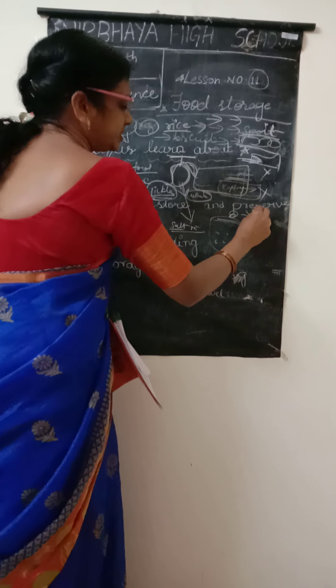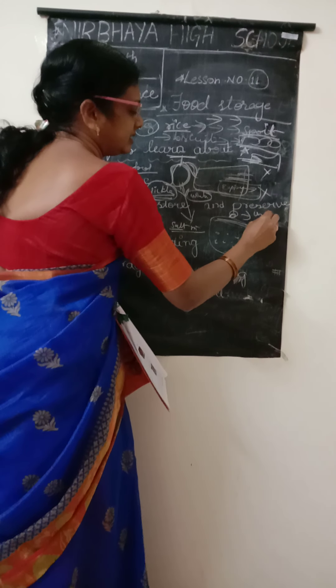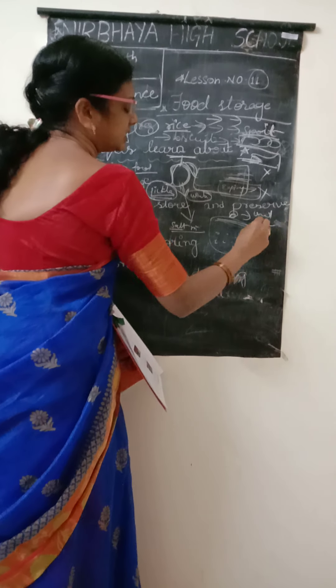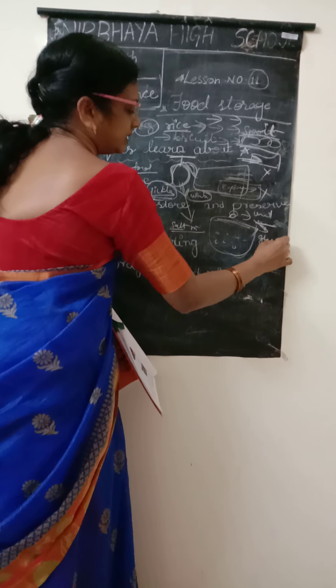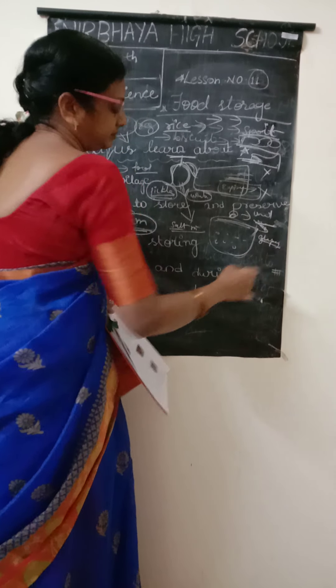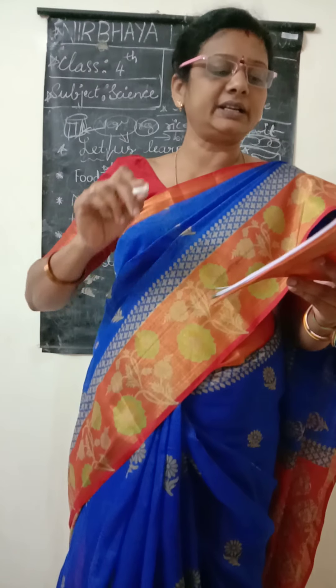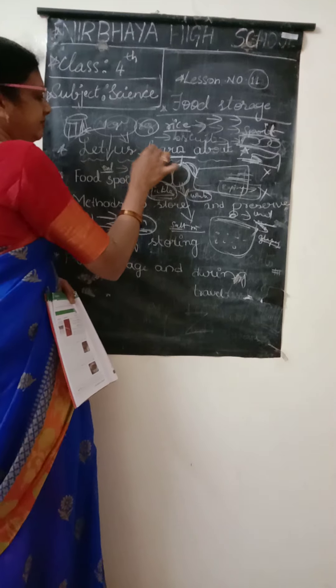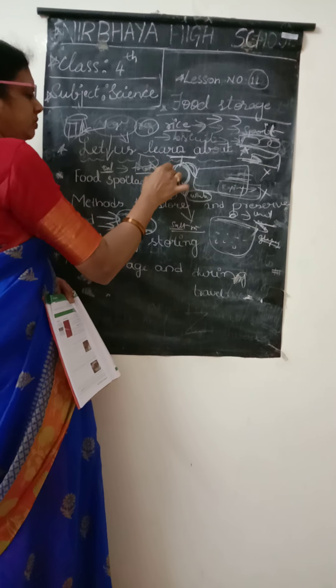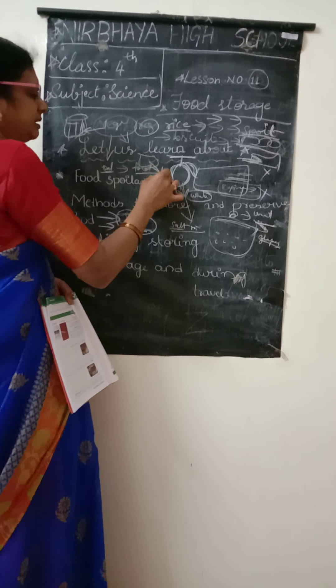Red chilies are kept under the hot sun and dried. Some food items like peas, meat, and ice creams are frozen in a deep freezer. Ice cream is kept in the deep freezer, otherwise it will melt if kept outside.